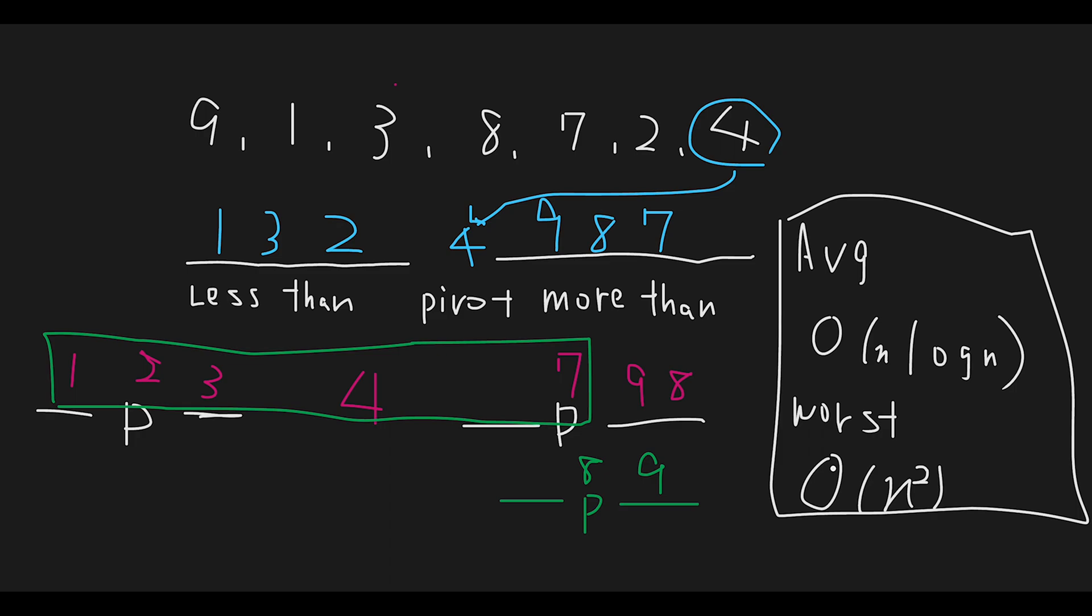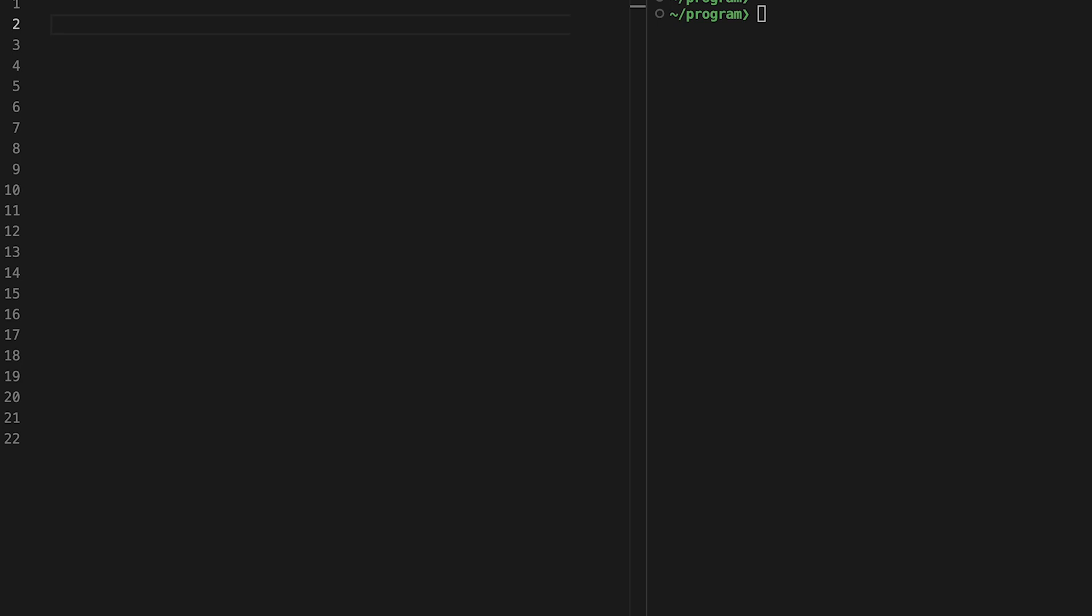Now we'll implement quicksort with Python. Define quicksort with sequence as input. First, get the length of the sequence: length equals len of sequence. If length is less than or equal to 1, just return the sequence.